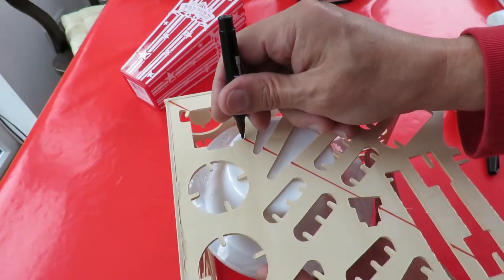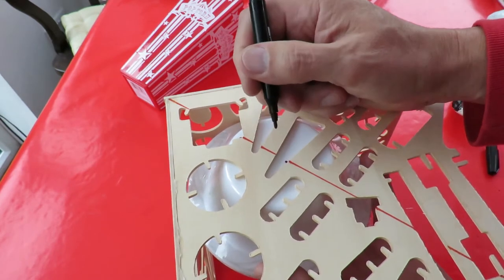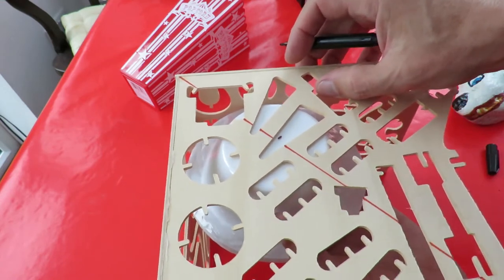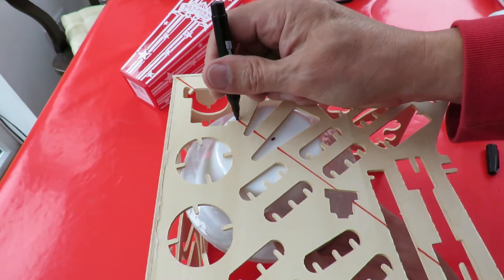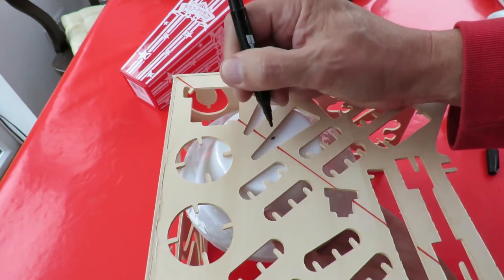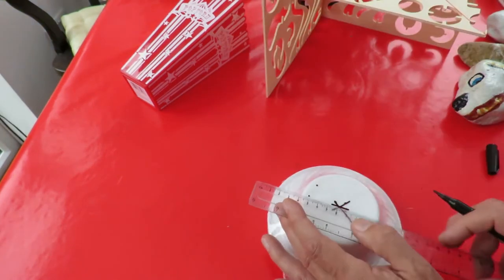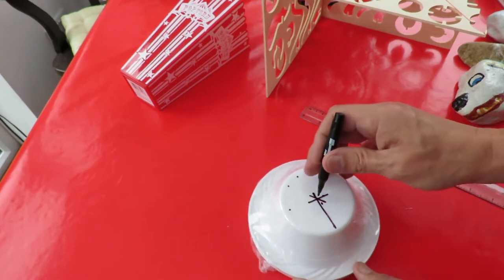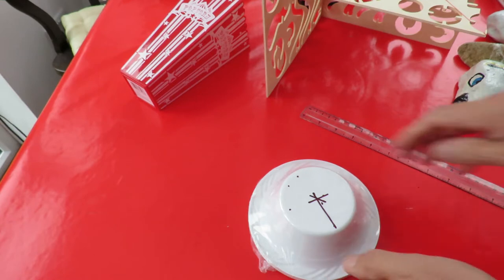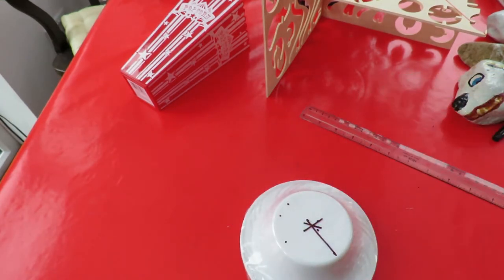So if I put a dot there and a dot there and join those lines together, turn it round, a dot there and a dot there. Alright so if I drill a hole in the middle of that, that should be the center or as close as I'm going to get by that sort of approximation.